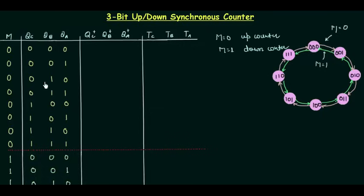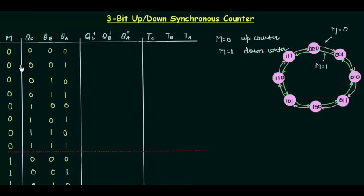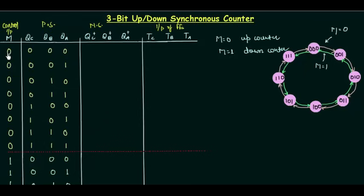Now let's design our circuit. The table has the control input M, the present state QC QB QA, the next state QC+ QB+ QA+, and the flip-flop inputs TC, TB, TA. We'll first find the next state for the first 8 cases — the up counting cases — since M is equal to 0.